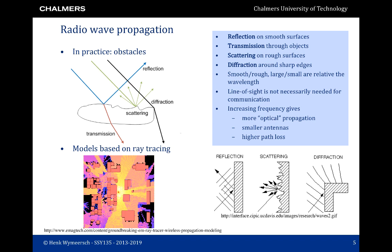Using these properties we can predict what the received power will be at different locations with respect to a certain transmitter — this is called ray tracing. In this picture we have a transmitter in the middle, and we launch rays from this transmitter in different directions. They interact with objects according to the different ways we've seen, and then we compute the power at each location. When the user is in the line of sight with respect to the transmitter, we will have high power.